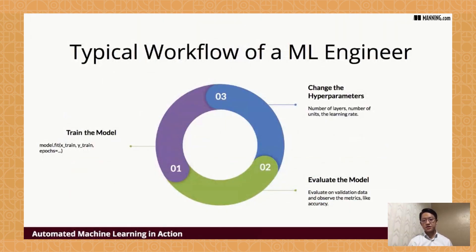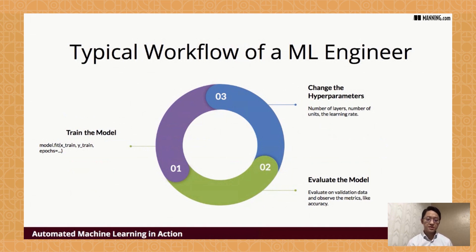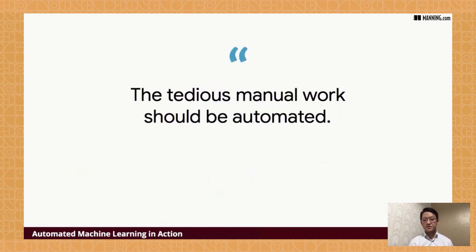Here's a typical workflow of a machine learning engineer: first, define and train a model with training data, then evaluate the model with validation data to see if it performs well. Based on that feedback, the engineer decides which hyperparameters — like number of layers, number of units, or learning rate — need to be changed. They then retrain and re-evaluate, going through this loop multiple times to tune a good model. This tedious manual work should be automated.